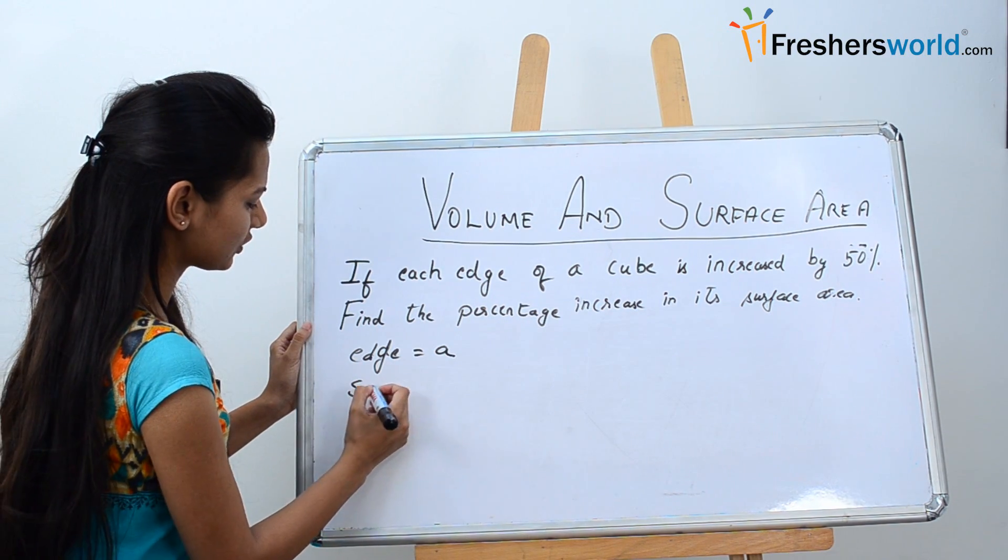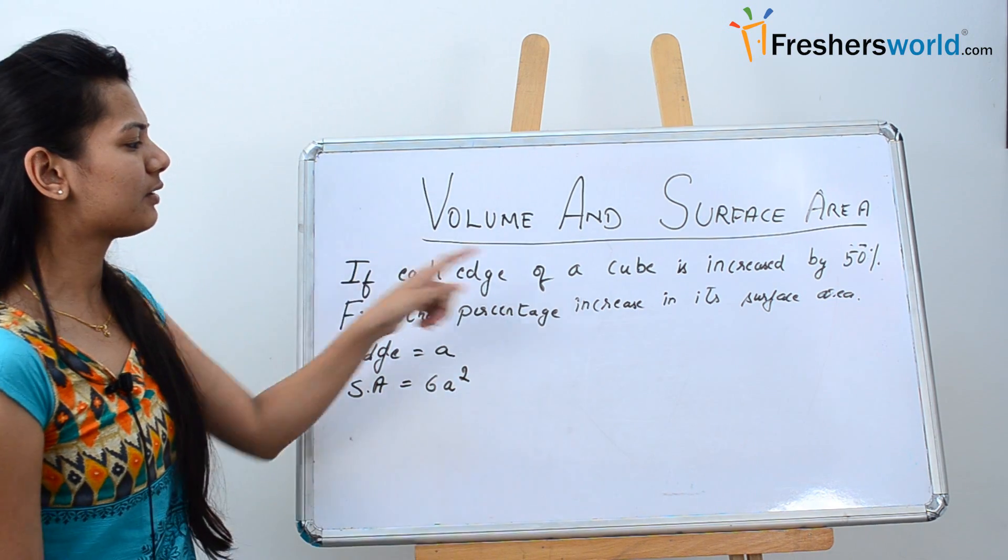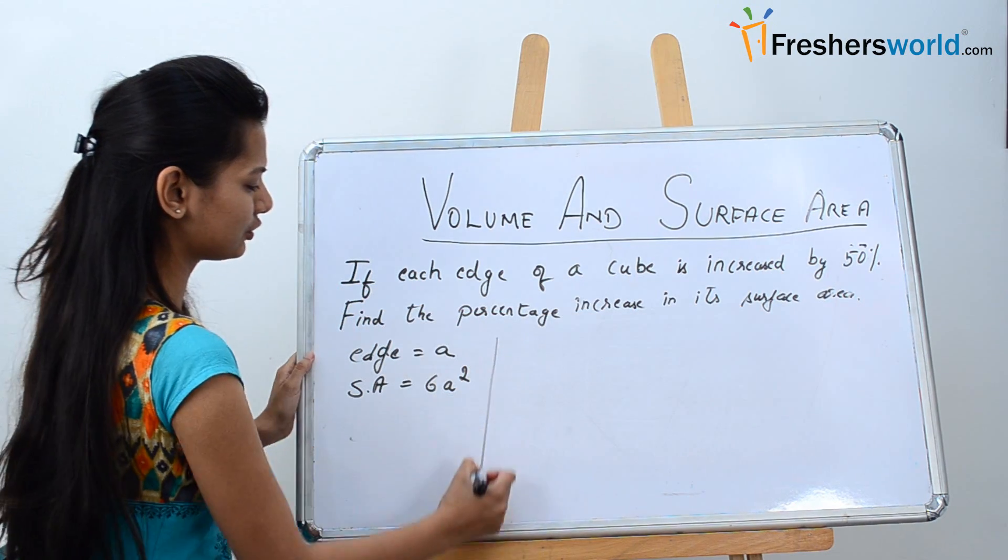Then what is the surface area of the cube? The surface area of the cube is given by 6a squared. In the second part of the question he says that the edge is increased by 50%. That means the new edge would be the previous edge plus 50% of it.